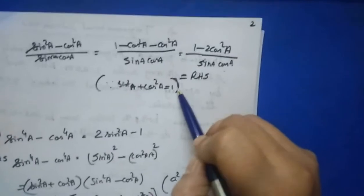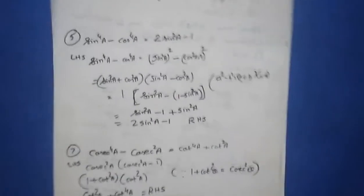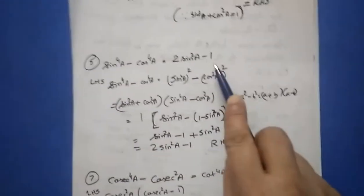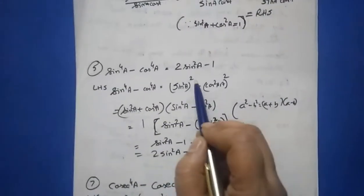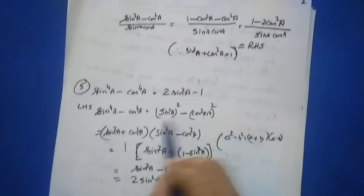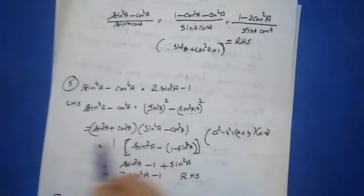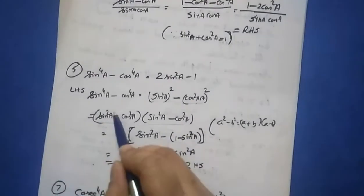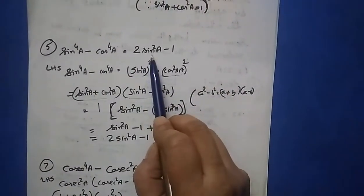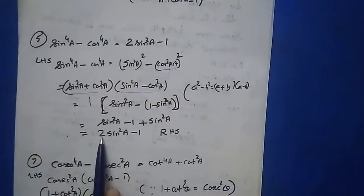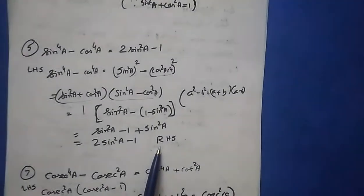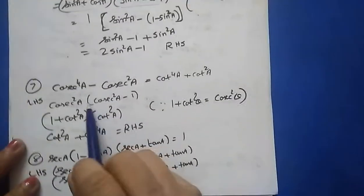Question five: sin⁴a − cos⁴a = 2sin²a − 1. Write sin⁴a as (sin²a)² and cos⁴a as (cos²a)². This is an a² − b² = (a+b)(a−b) factorisation. You know sin²a + cos²a = 1, and the answer should be in terms of sin, so change cos²a to (1 − sin²a). You get 2sin²a − 1, which equals the right hand side. Question six is similar — solve on your own.